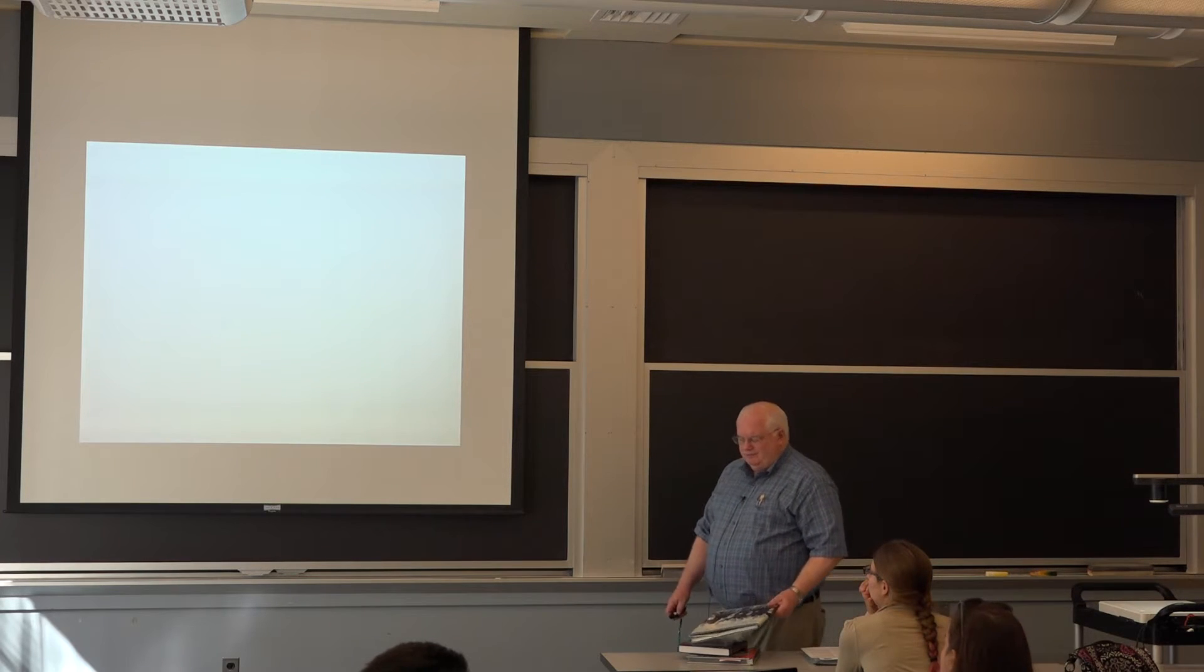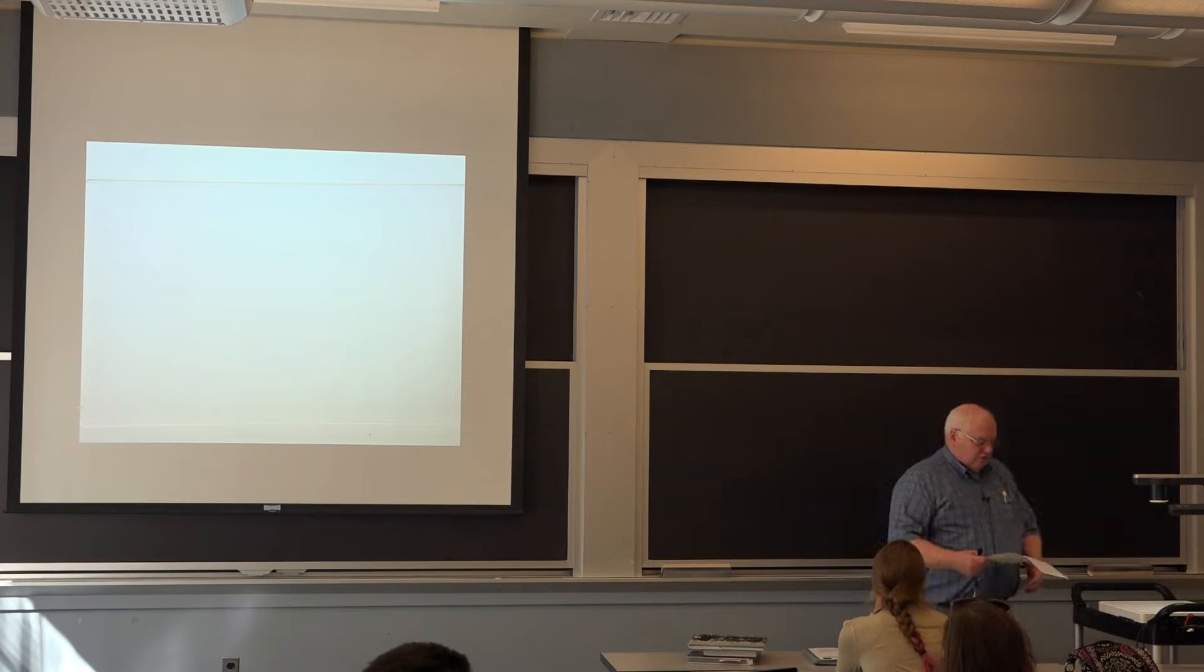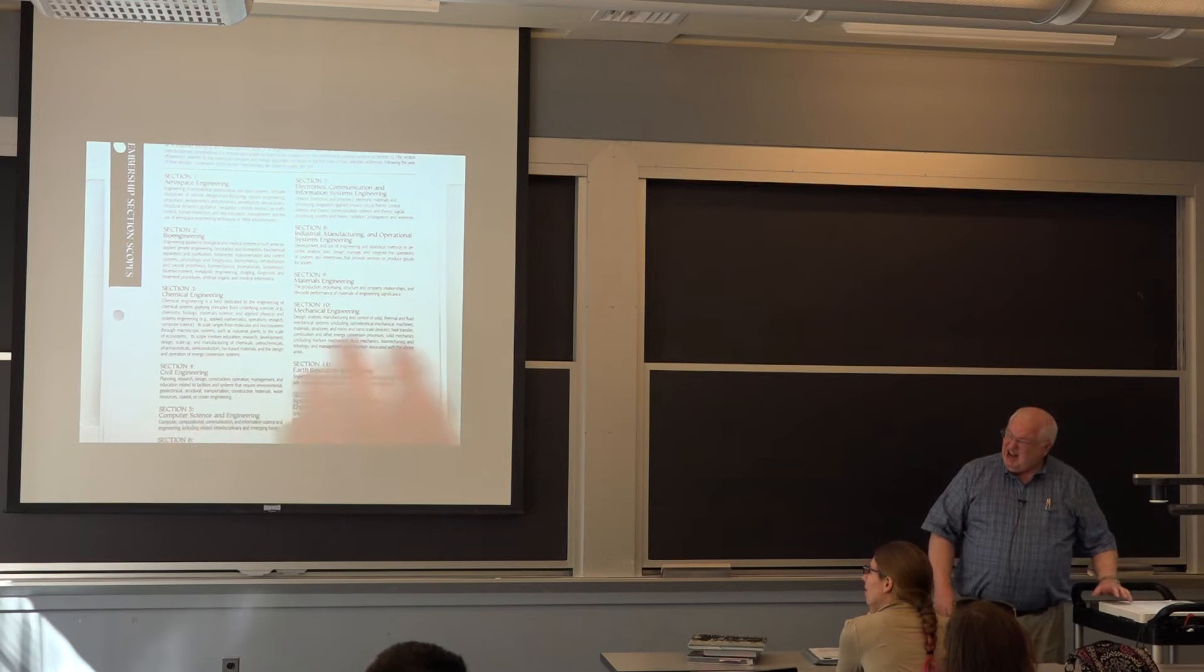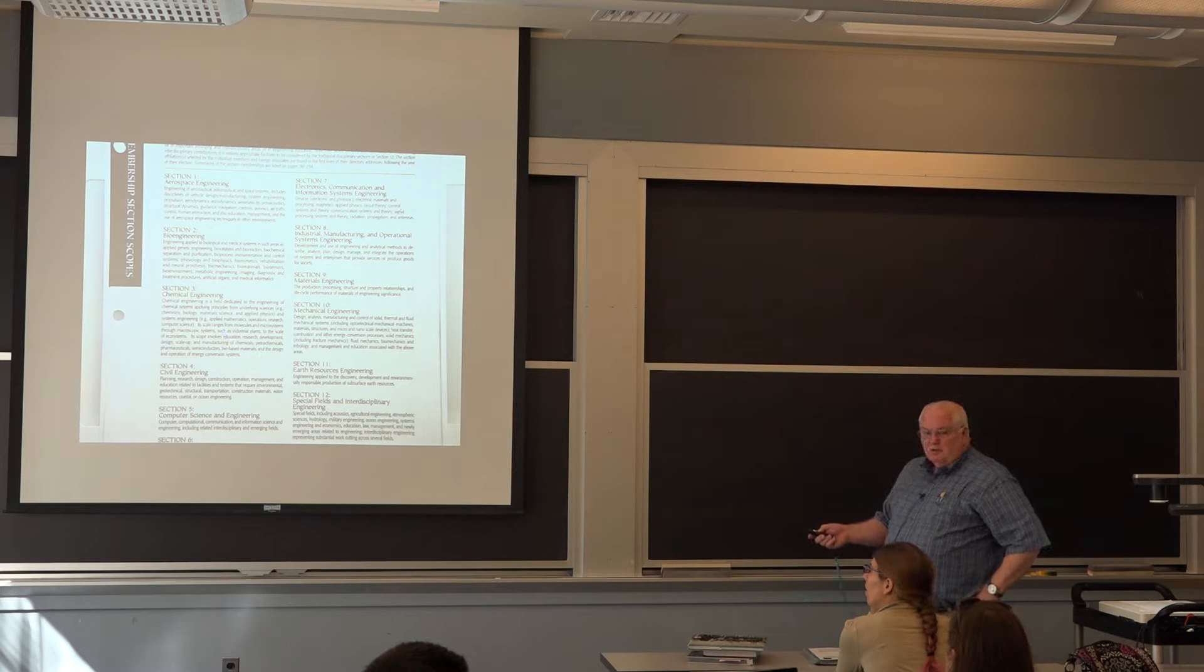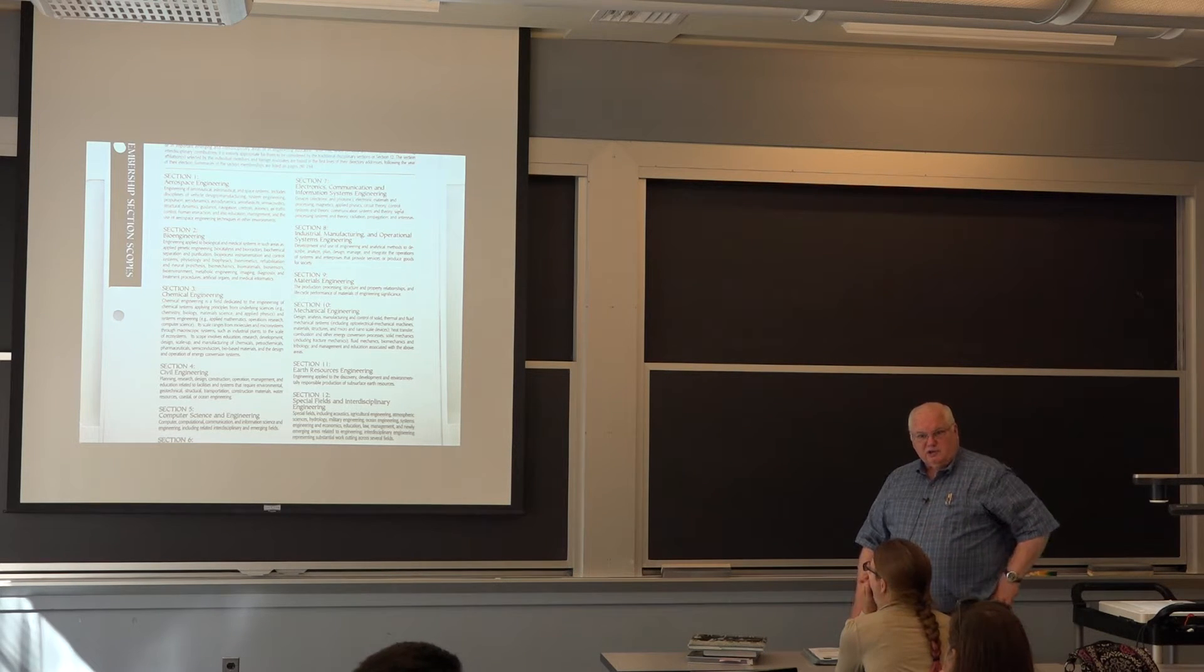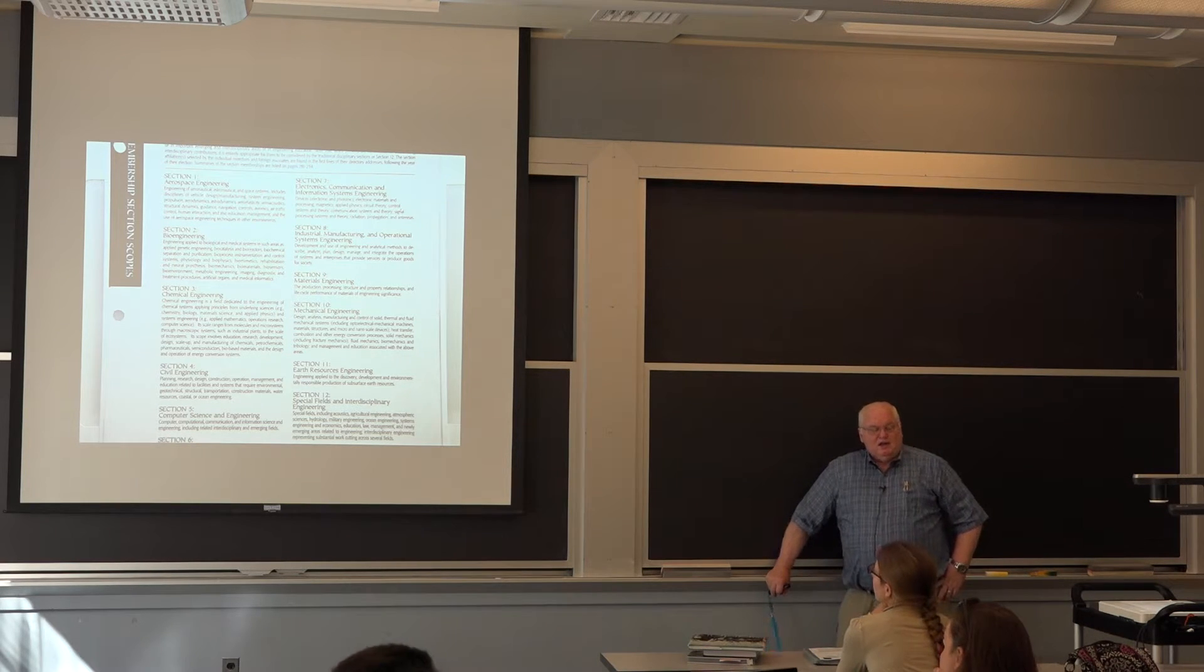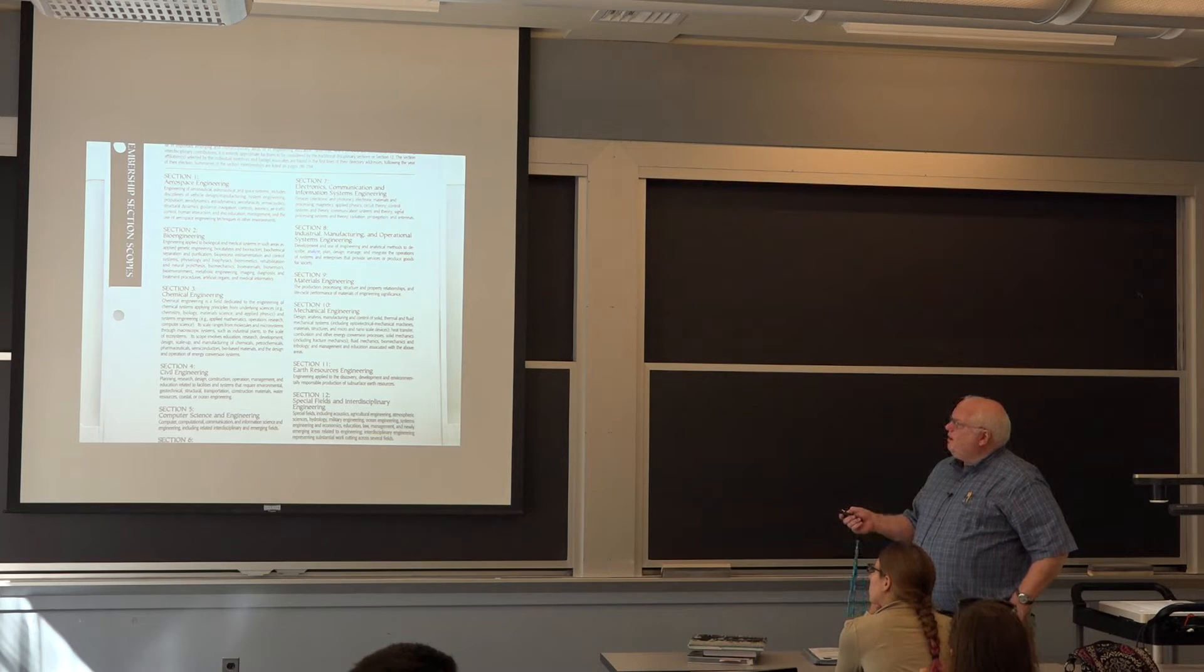So the National Academy of Sciences, which is a quasi, it's not a governmental agency, but it gets a lot of its funding for doing work, studies from the National Research Council is a subsidiary. They formed the National Academy of Engineering in 1964, and this is, if you're, there's only about 2,200 members of the National Academy of Engineering out of about 2.2 million engineers in the country. So only about one out of a thousand engineers gets elected to the National Academy.